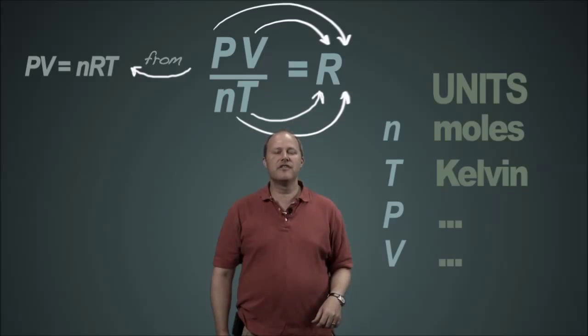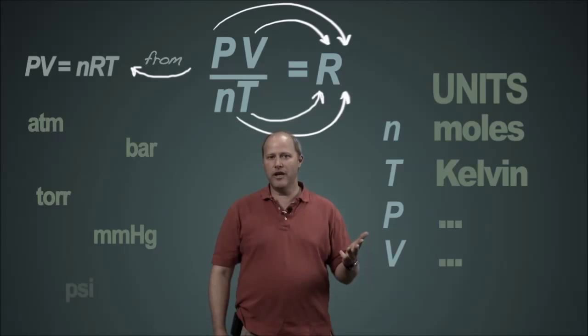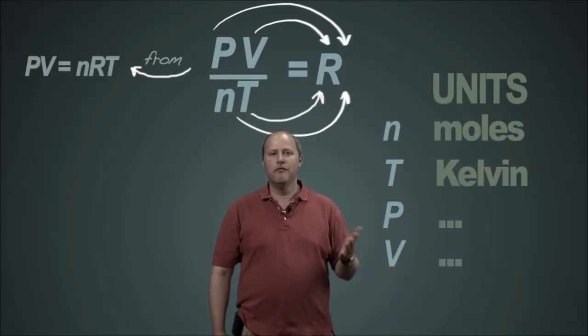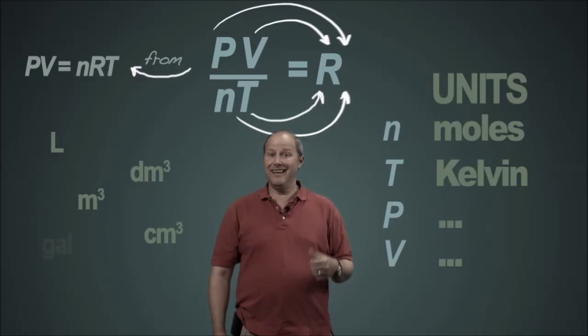But no one can decide what the units for pressure should be or the units of volume should be. And so as a result for pressures we have atmospheres, we have bars, we have torr, we have millimeter mercury, we have pounds per square inch, we have other crazy ones that we can dream up. Volume? Almost always in liters. But it could be in cubic decimeters, could be in cubic meters, cubic centimeters. Could also be in gallons or bushels or other absurd units.